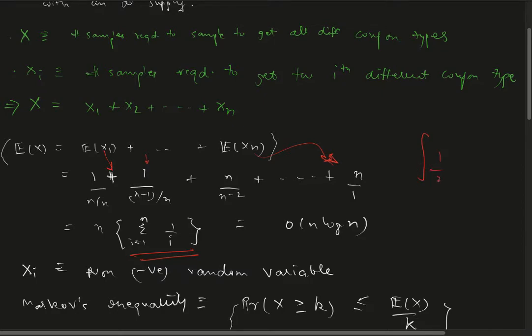What we can see is this is nothing but the discrete version of integral 1/x dx, and we know this is x ln(x) between 1 and n, so ln(n).